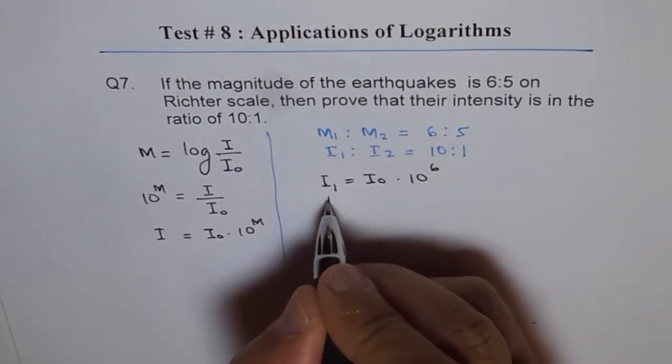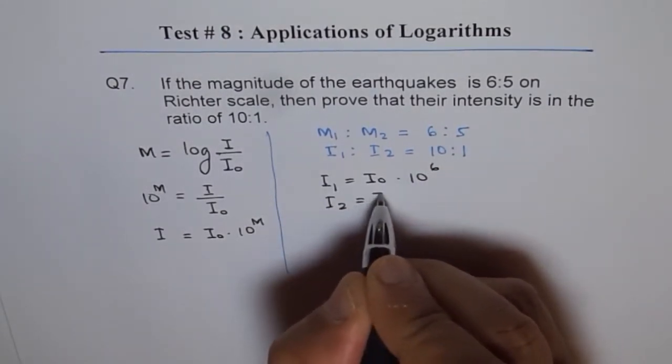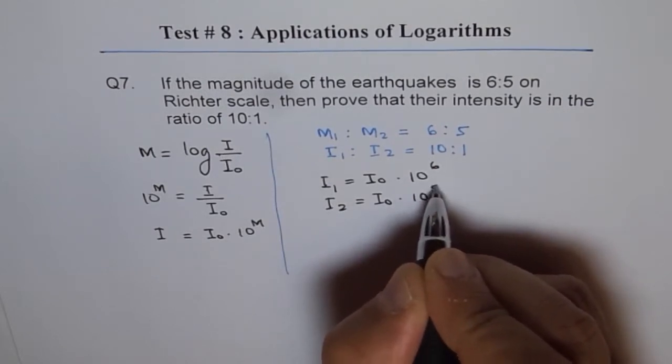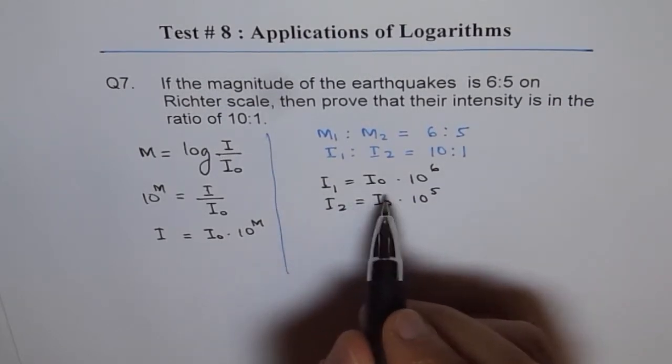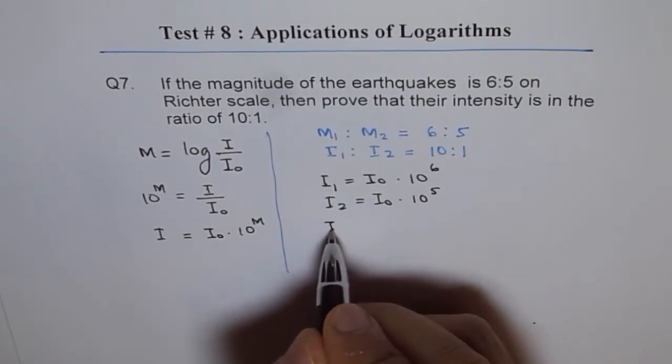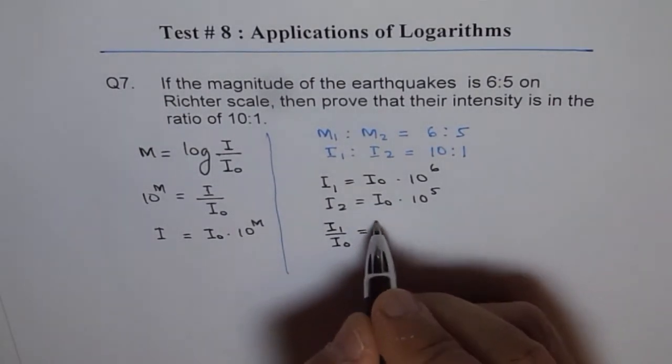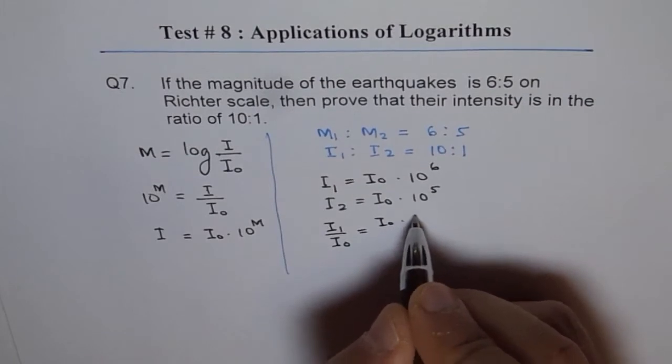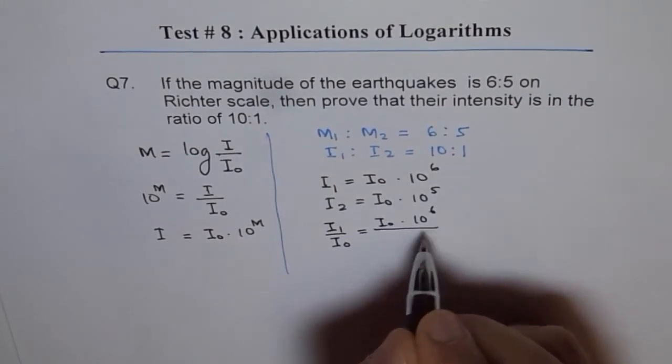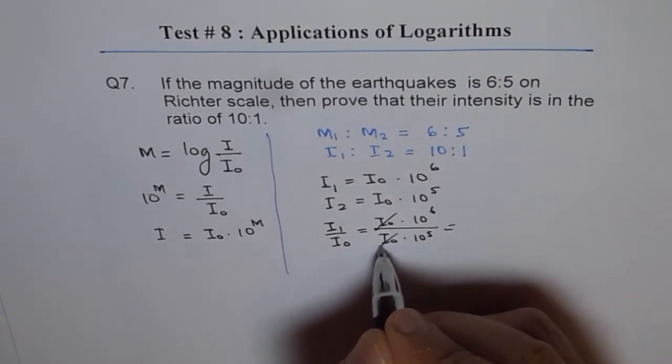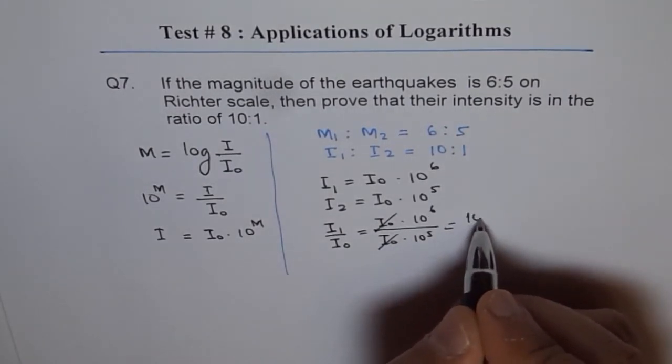And for I₂, we have I₀ into 10 to the power of M₂. And when we divide them, so that is I₁ over I₂ equals I₀ into 10 to the power of 6 divided by I₀ into 10 to the power of 5. These cancel out and we get 10.